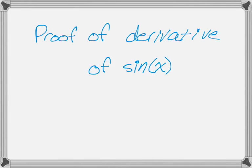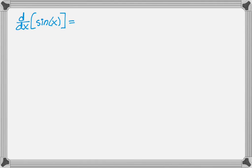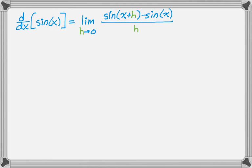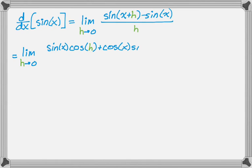Now let's get a proof of the derivative of sine of x. We want d/dx, the derivative with respect to x, of sine of x. So that's going to be, by the limit definition, the limit as h approaches 0 of sine of x plus h minus sine of x all over h. Now I'm going to use the sum formula on sine of x plus h. So that's going to be sine of x cosine of h, plus cosine of x sine of h, minus sine of x, and then all over h.